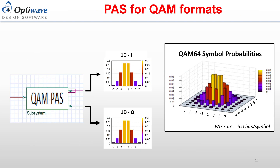Probabilistic amplitude shaping can be applied to QAM systems as well. In these systems, it is typical to apply one-dimensional shaping on both the in-phase and quadrature-phase arms. In QAM, the power of the symbol is proportional to the absolute value, which is why the symbols negative 1 and positive 1 are transmitted with the highest probability. The plot on the right displays the symbol probabilities of a QAM system along two dimensions, where it can be seen that the lowest power symbols are transmitted at the highest probability.